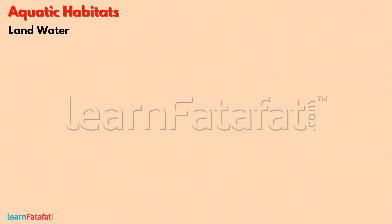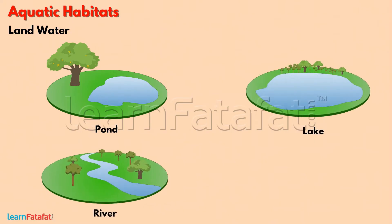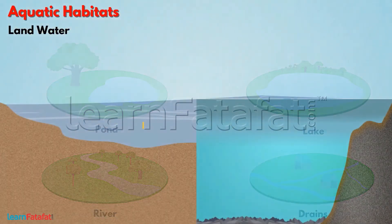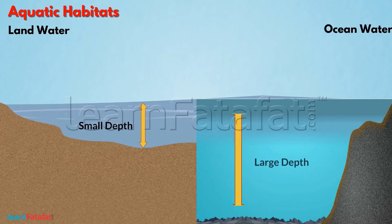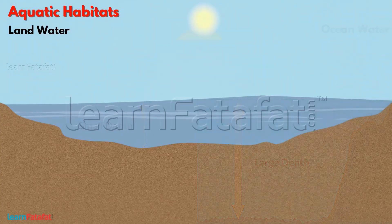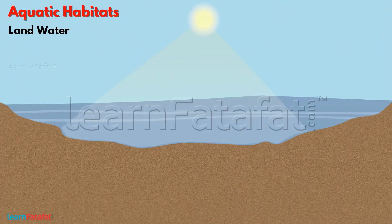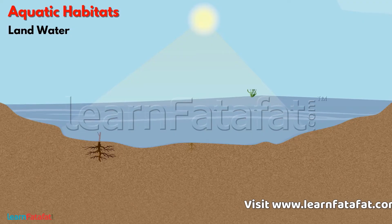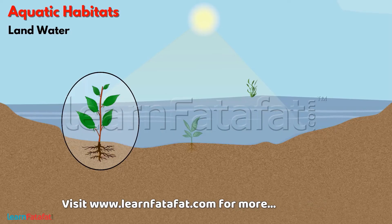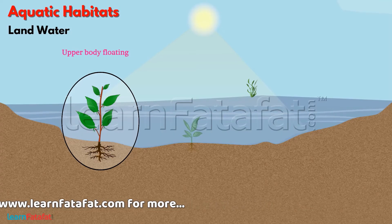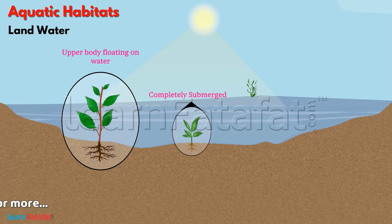Land water basically exists in ponds, lakes, rivers and drains. The depth of these structures is very small as compared to oceans, which allows sunlight to reach the bottom. This makes it possible for some plants to grow at the bottom of water bodies. Some plants have their upper body floating on the water while others are completely submerged — that is, they are underwater.